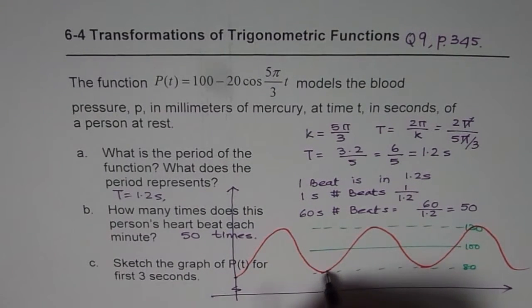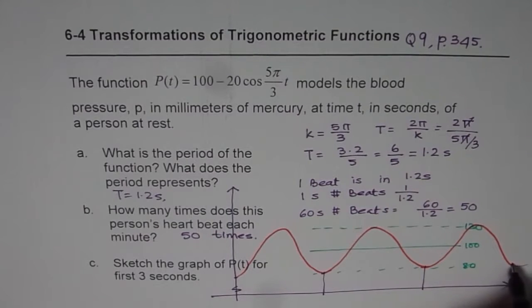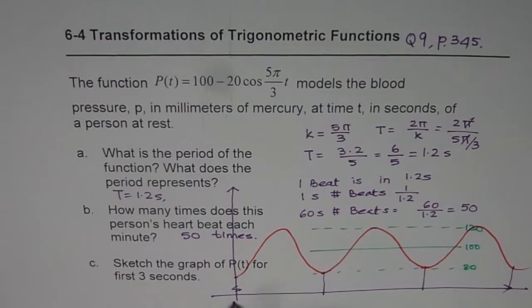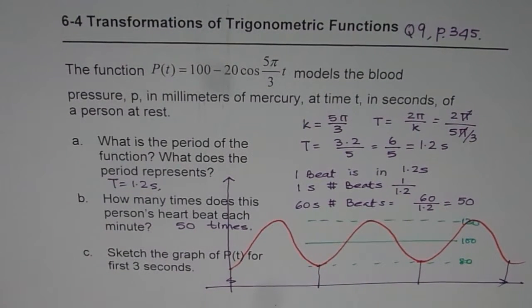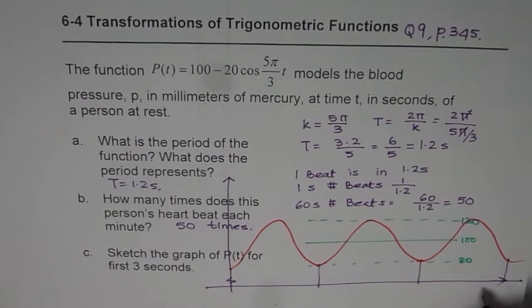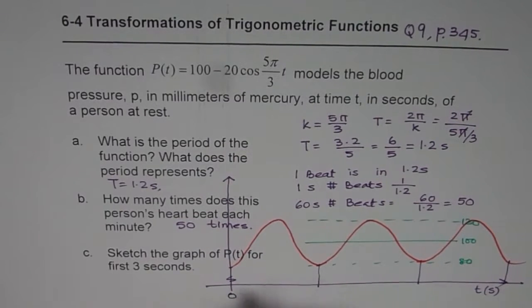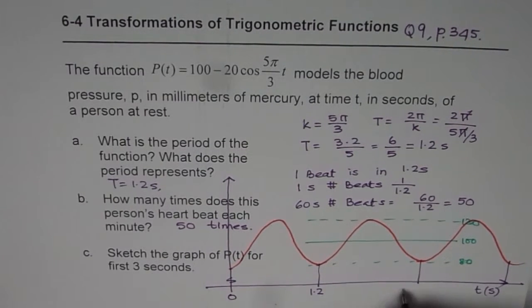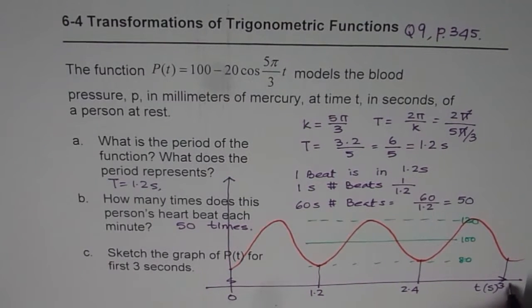Now, we know that each cycle is 1.2. So these are my 1.2. Let me push it a bit on the right side. I hope now it is better for you. On the x-axis, we have time t, T in seconds, starting with zero. So this is 1.2, that becomes 2.4, and this is 3.6.